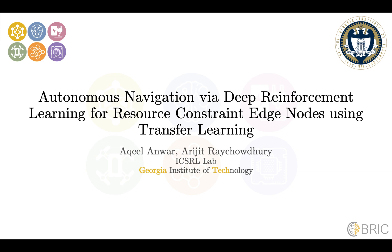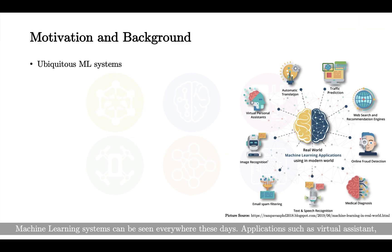Autonomous navigation via deep reinforcement learning for resource-constrained edge nodes using transfer learning. Machine learning systems can be seen everywhere these days. Applications such as virtual assistant, traffic prediction, and image recognition have become an important part of our life.